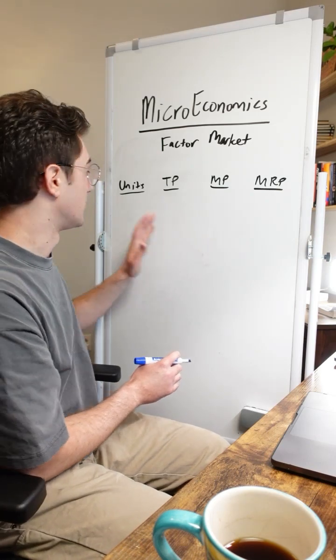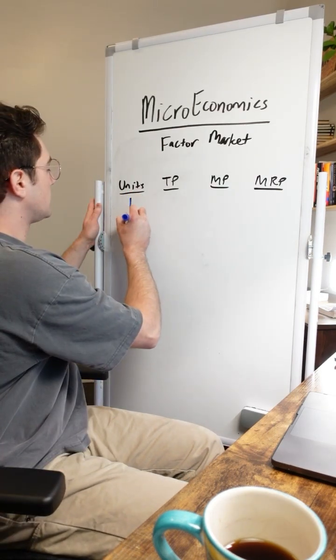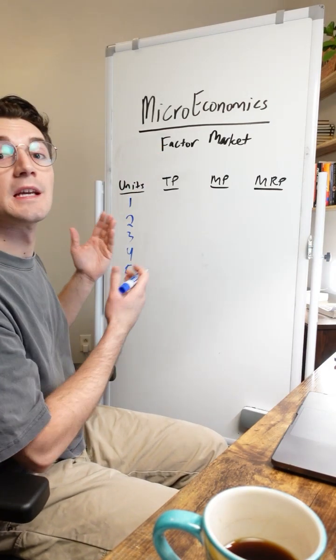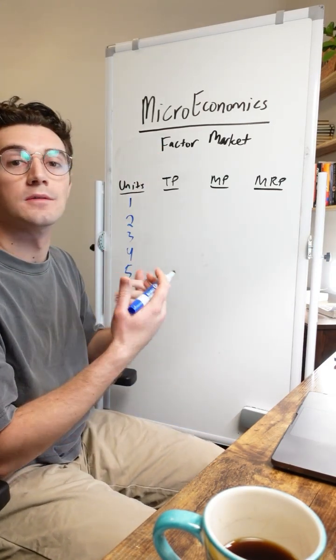With that being said, the first thing I want to take note of here is the units column. All these units are not of output, but rather with the factor market, they're units of capital or land or labor.